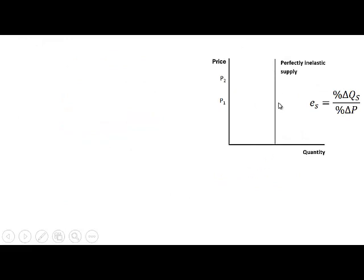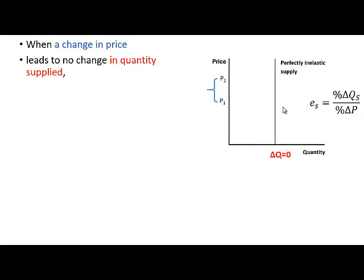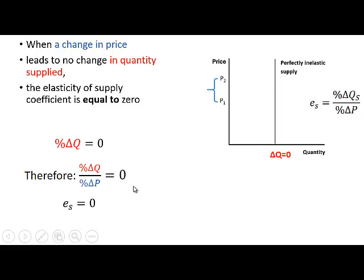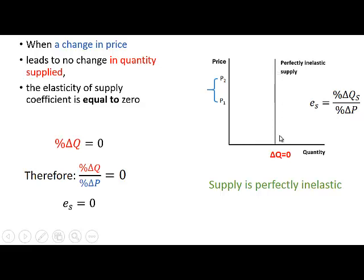Here we have a perfectly vertical supply curve — we say it is perfectly inelastic. When there is a change in the price there is no change in the quantity supplied; it stays the same. The elasticity of supply coefficient is equal to zero because the percentage change in quantity is zero. Therefore, percentage change in quantity supplied divided by percentage change in price is equal to zero. Price elasticity of supply is therefore also equal to zero. Supply is perfectly inelastic — that is a vertical supply curve.